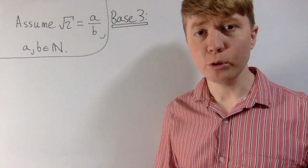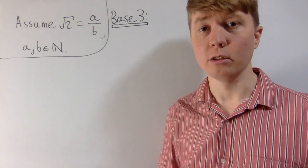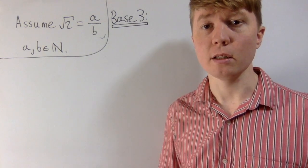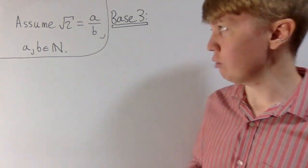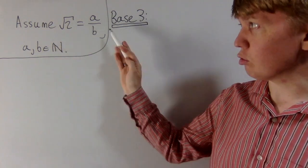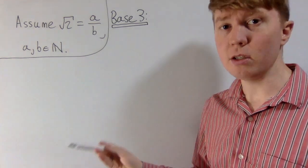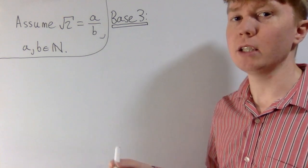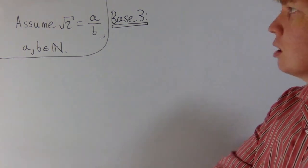We're going to have a look at some fun proofs that the square root of 2 is irrational using different bases. We'll start off with a nice one in base 3. What we need to do is assume for a contradiction that the square root of 2 is rational, so we can write it as a fraction with some integers.